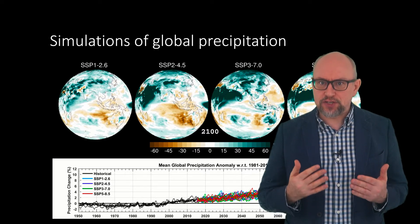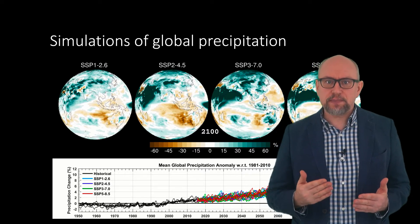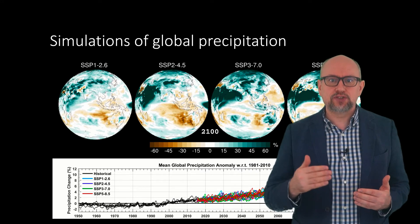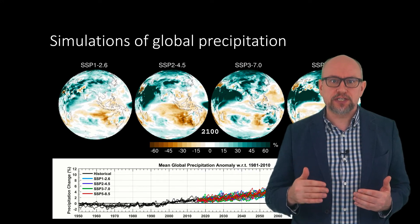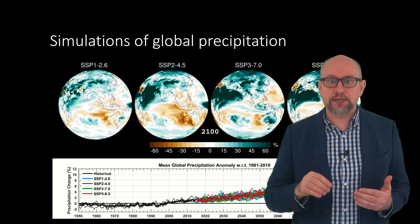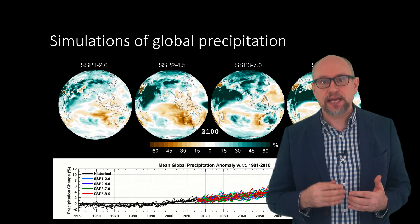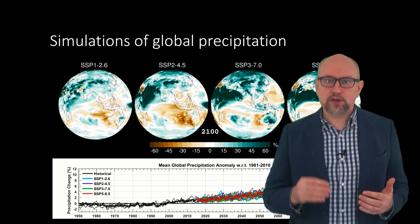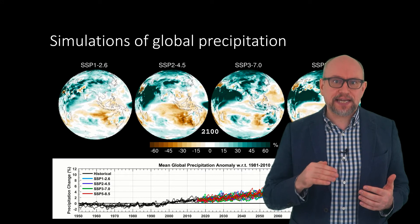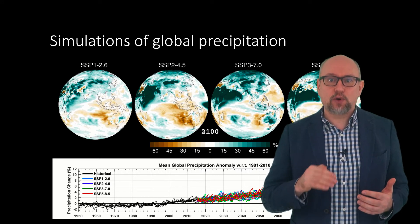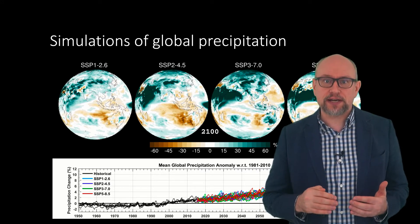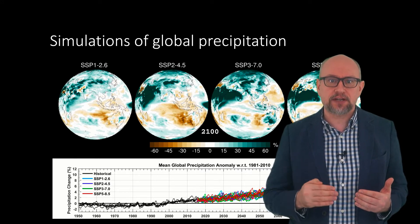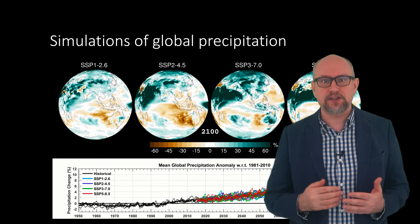Some presently dry regions may be glad to see increased rainfall, just as drier conditions may benefit some currently very wet places. However, heavy rainfall that causes flooding as well as extended or more frequent droughts are likely to be disruptive to ecosystems and agriculture in the afflicted regions.